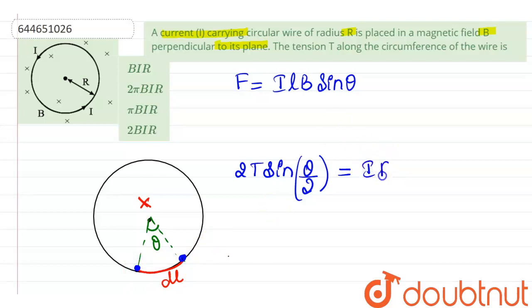That should be equal to I times B times DL. So for small angles, sin theta by 2 is approximately theta by 2. Therefore, if theta is small, we can write sin theta by 2 as theta by 2.